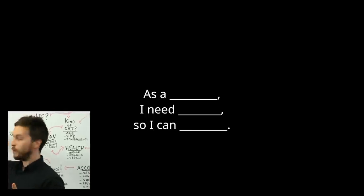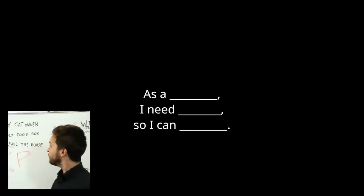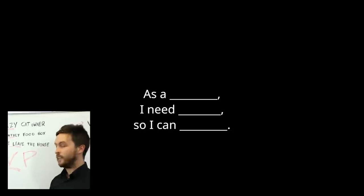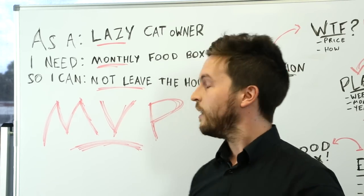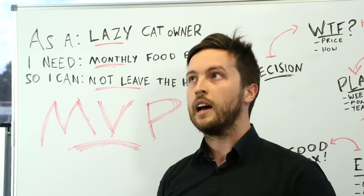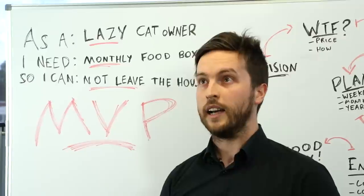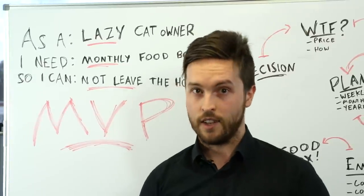It starts with a really simple set of sentences. I say I need so I can. Today we're going to do cat food monthly delivery which could be put as a cat owner I need some cat food so my cat doesn't starve.